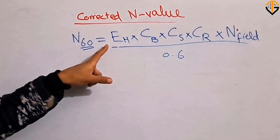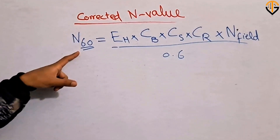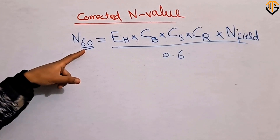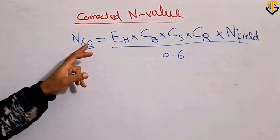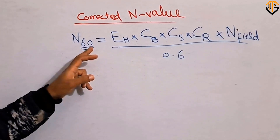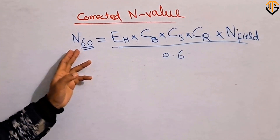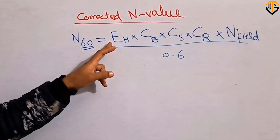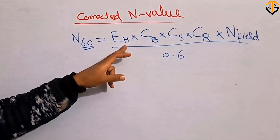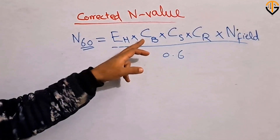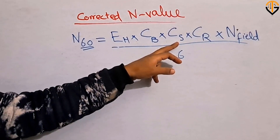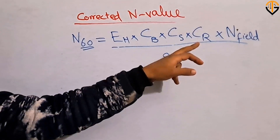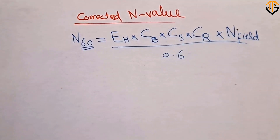Here we can see the formula for the corrected N value, N subscript 60. This value applies a hammer energy correction for 60%, which is why it is named N₆₀. It equals E_H (hammer energy correction) multiplied by C_B (borehole correction) multiplied by C_S (sampler correction) multiplied by C_R (rod length correction) multiplied by N_field, divided by 0.6.